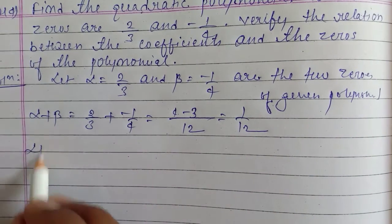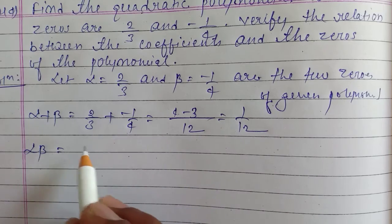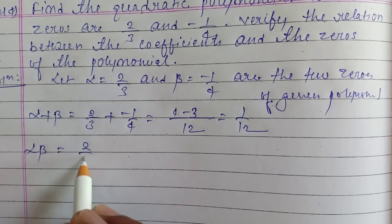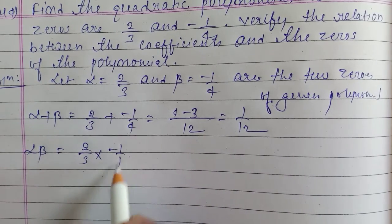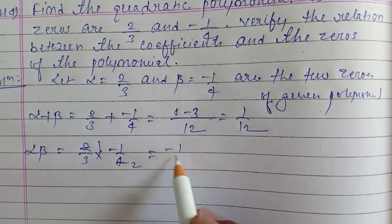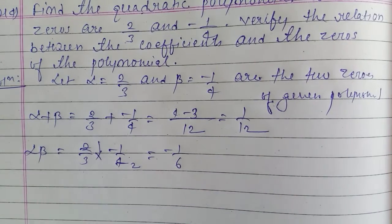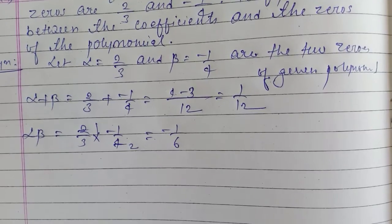Then we will find the product of zeros, alpha into beta, which is 2/3 multiplied by minus 1/4. After cancellation, the product alpha times beta equals minus 1/6.